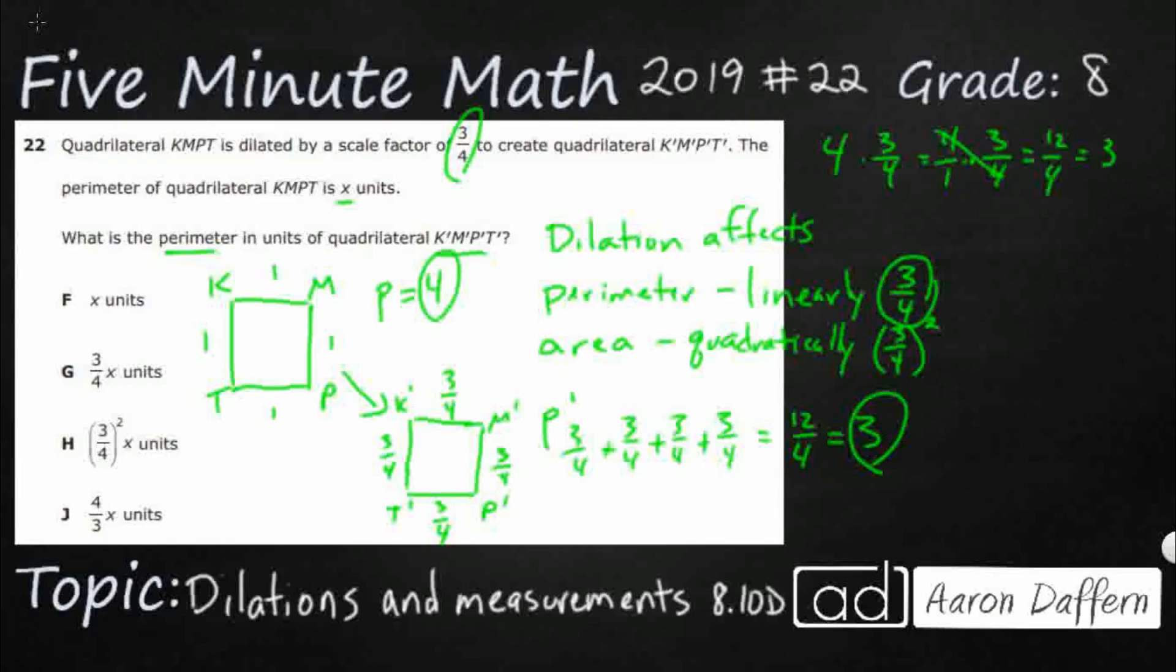Which means we need to take our original x, multiply it by the dilation 3/4, the scale factor right there, and we will get our answer. So our answer is G.